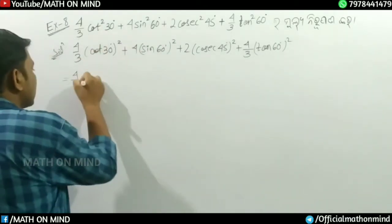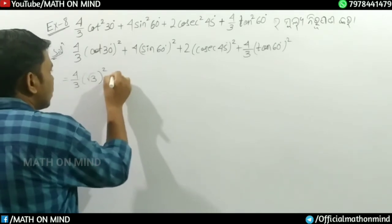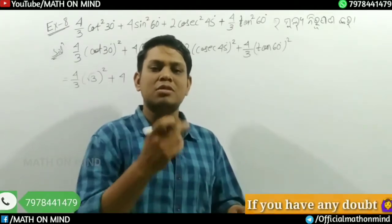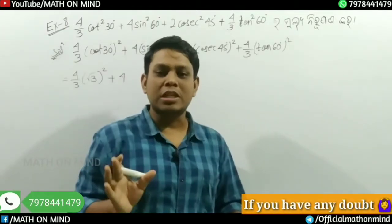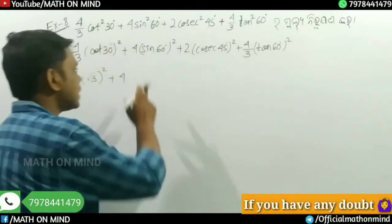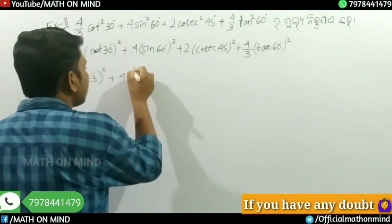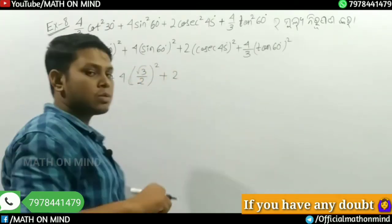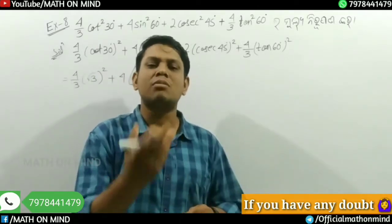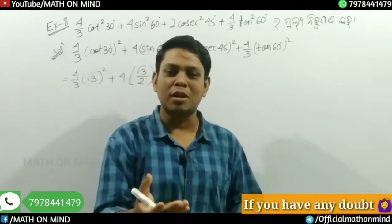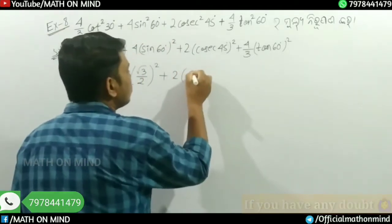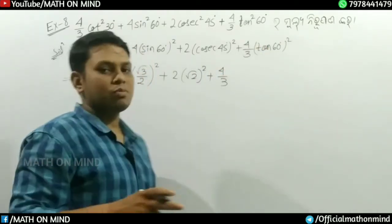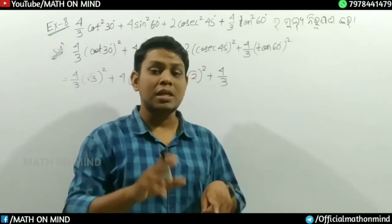We have (√3)² plus 4 into sin²θ. The sin value here is sin 45° which is 1/√2, so sin squared is 1/2. Sin 60° is √3/2. Looking at this: (√3/2)² plus 2 into sec²θ. The sec value, we get 1/√2 squared.